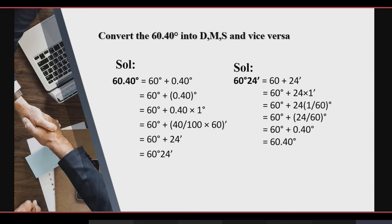We do 60.40 degrees: that is 60 degrees plus 0.40, which is the decimal part. We separate the decimal part and convert it into minutes. We multiply 0.40 by 60 — since 1 degree is equal to 60 minutes — and when we solve this, we have 24 minutes. The answer is 60 degrees and 24 minutes.